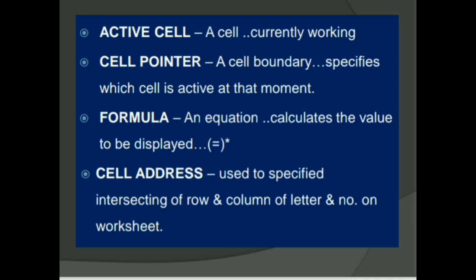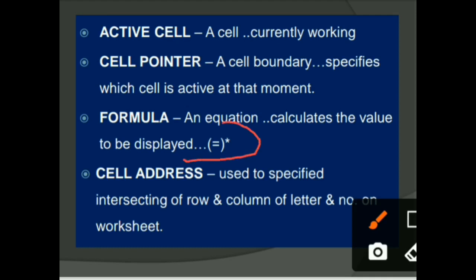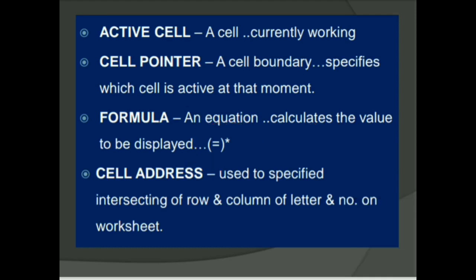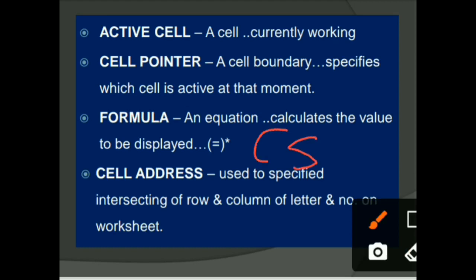Formula: type of equation which helps to calculate the values. Most important is, always formulas are started with equal to sign. Next is the cell address. Cell address is used to specify intersecting of row and column of letter and number on worksheet. Cell address tells us in which row and which column you are working. For example, cell address is C8. Here C represents name of the column, and 8 represents number of the row.